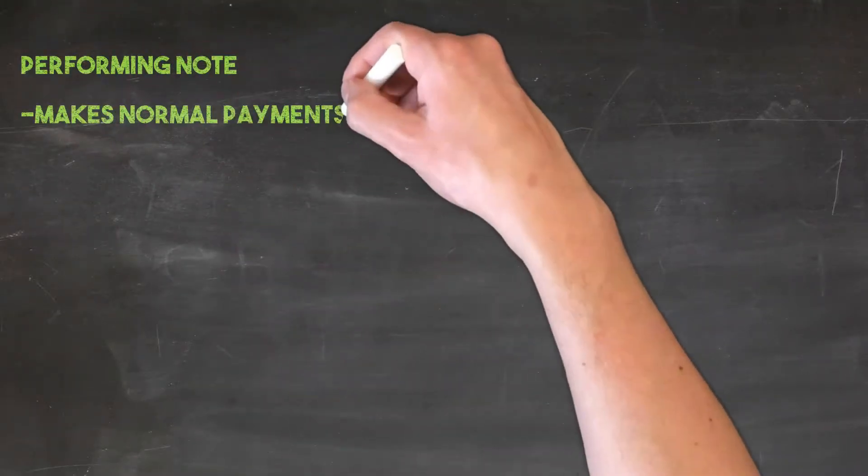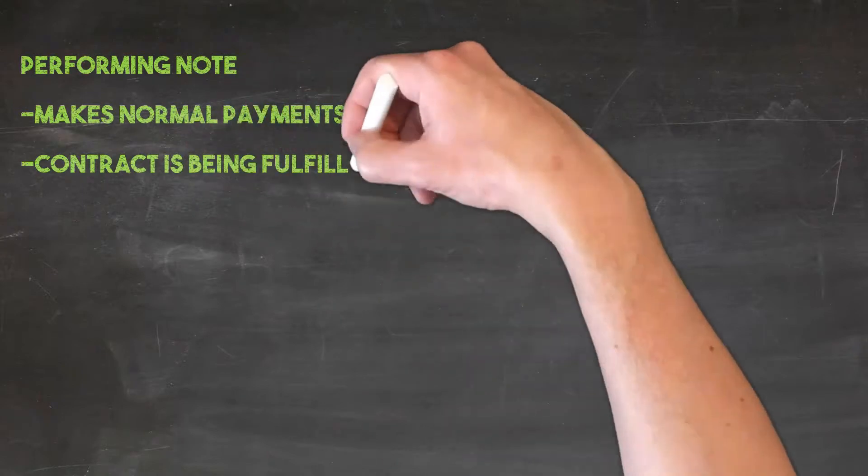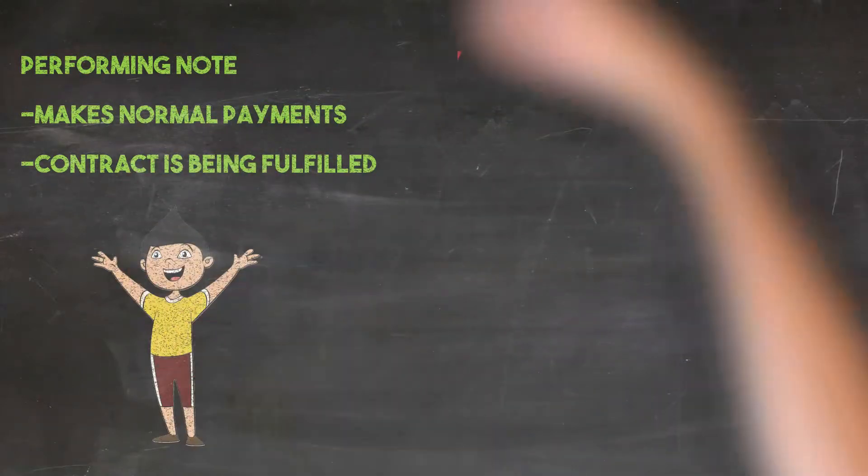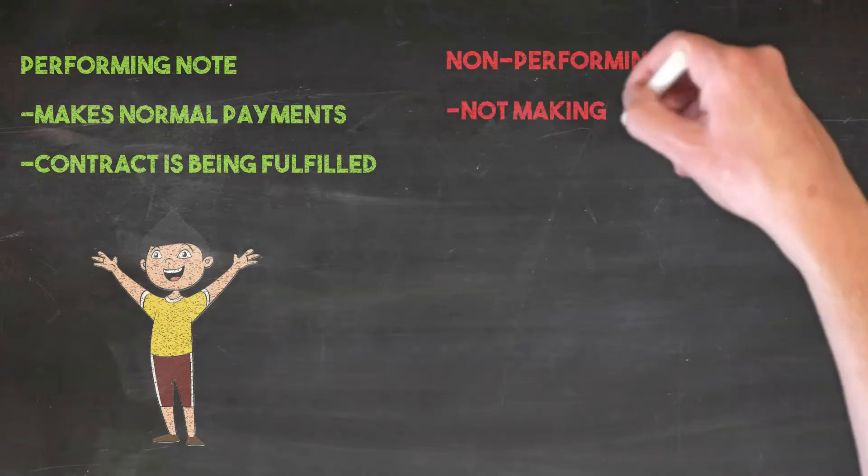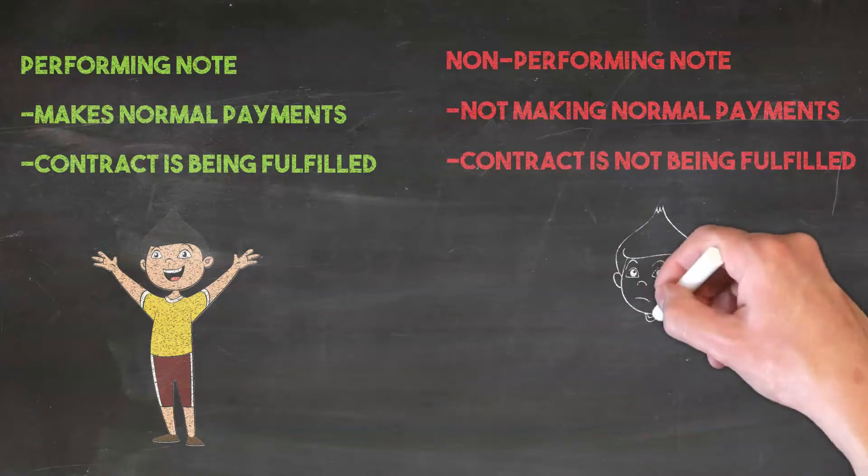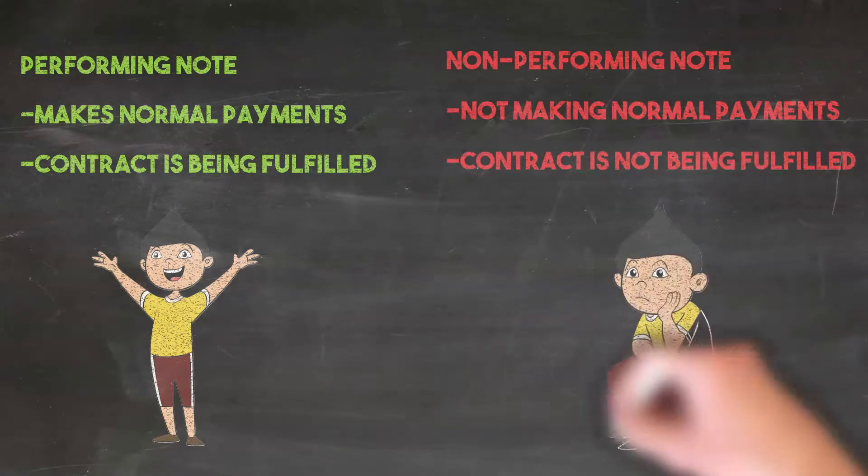However, that's not the only way to invest in notes. The previous scenario was an example of a performing note. It's called a performing note because the borrower is paying and performing their part of the contract. What happens when the borrower doesn't make their payments? This is called a non-performing note and it offers a unique opportunity.